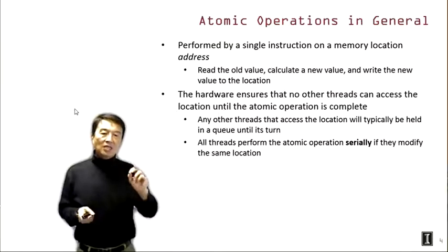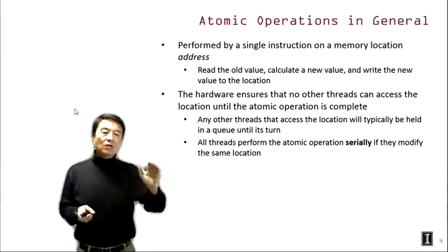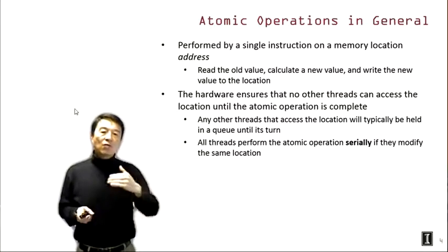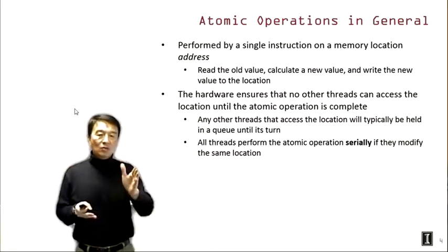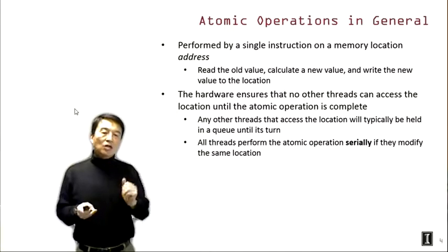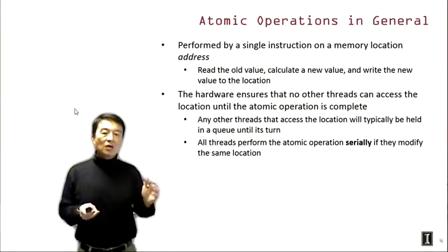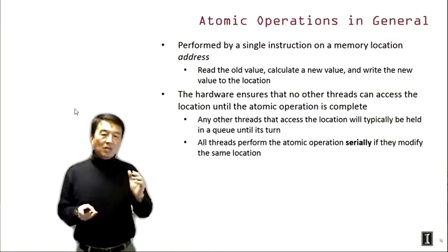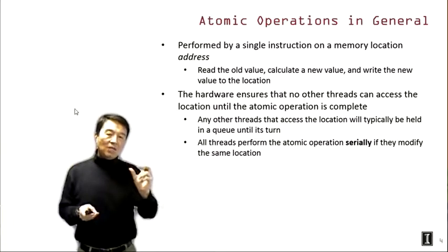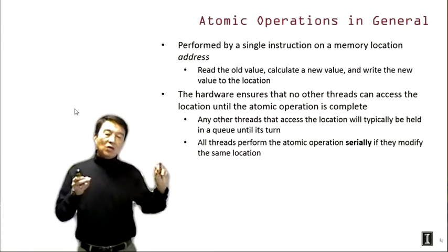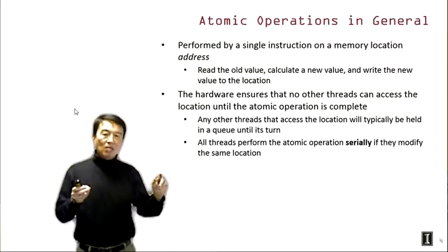None of the other threads can access the same location while the atomic operation is being performed by the first thread. Any other thread wanting to access that location will typically be held in a queue waiting its turn. All threads perform atomic operations serially on the same location — only one can execute at a time. As a programmer, you need to be aware that atomic operations can be very expensive in terms of parallelism because they effectively serialize execution.